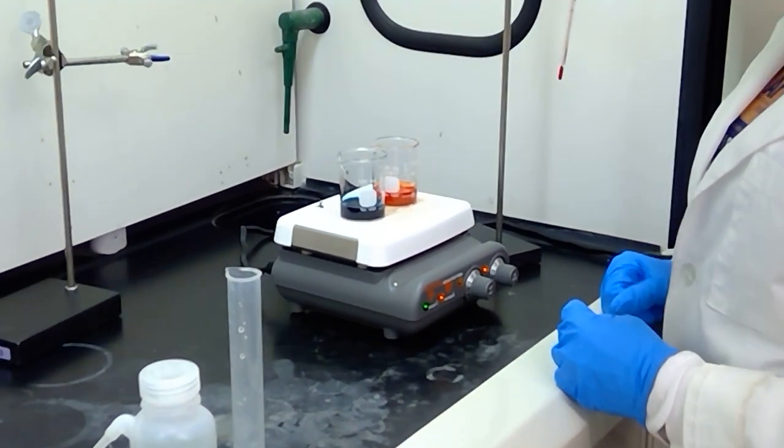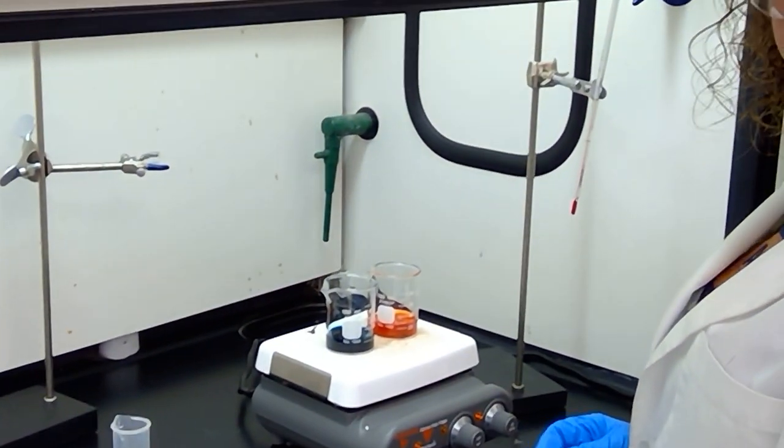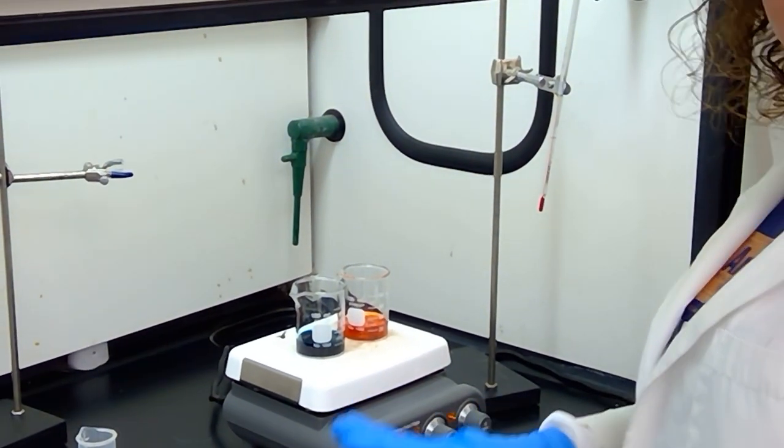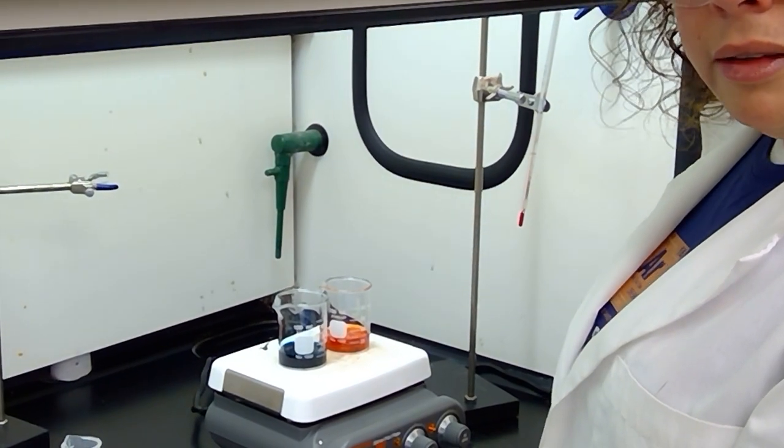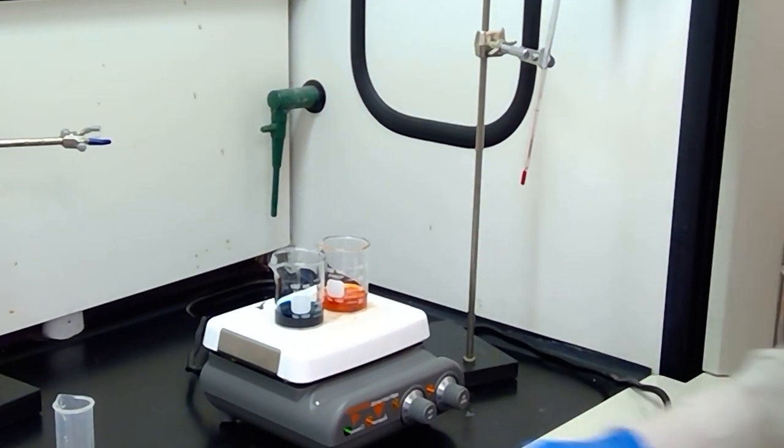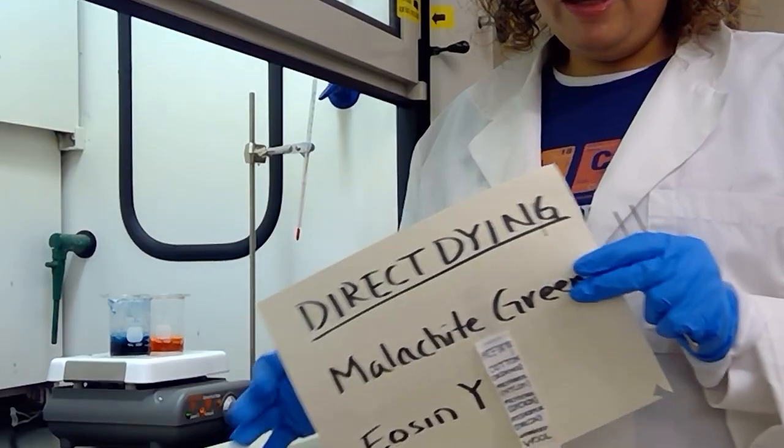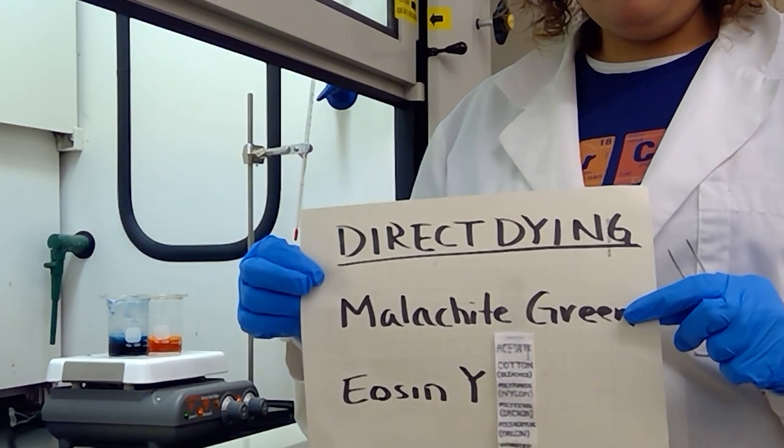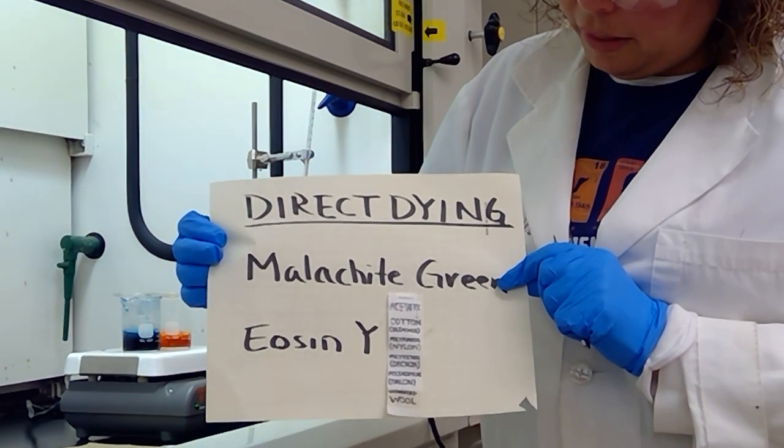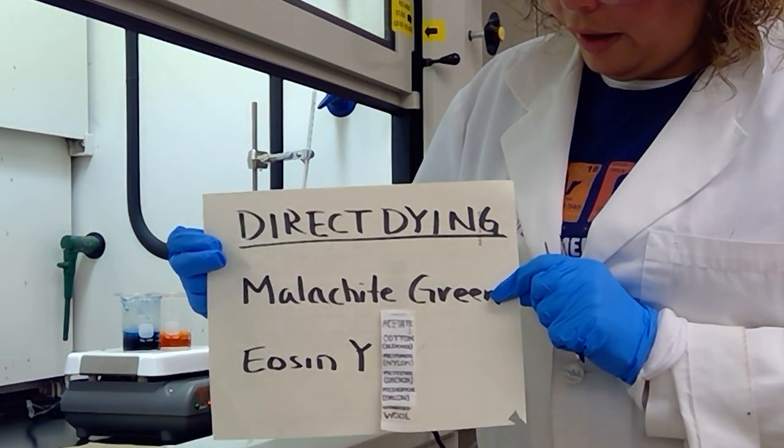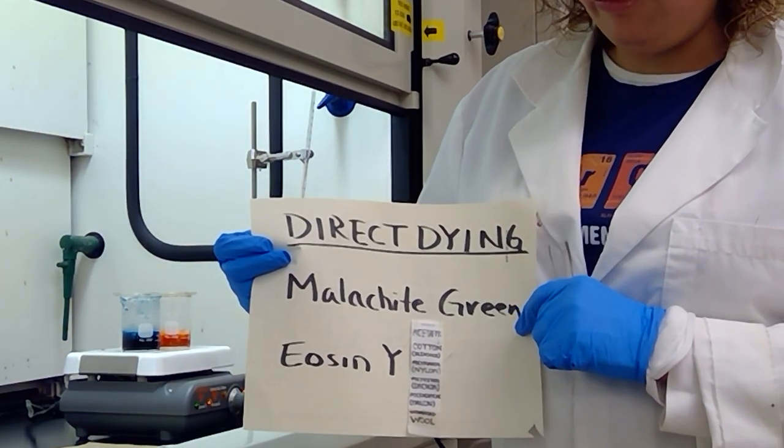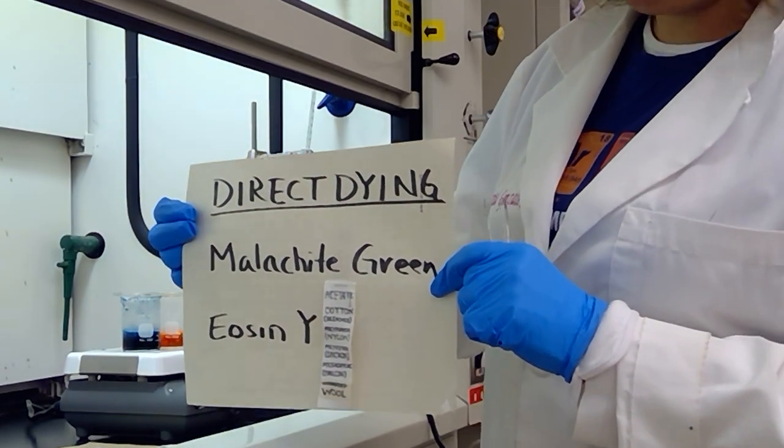Once we get these dye solutions up to a boil, we will add the fabric strip, and I will show you what the fabric looks like against the key that you saw in the beginning so that we can see how the different fibers color with both of these colors. We are currently direct dyeing with the malachite green and eosin Y. Just to remind you about the different multi-fiber fabric strip, we will take a look at what each of these colors looks like once the solution has been applied to the fabric strip.